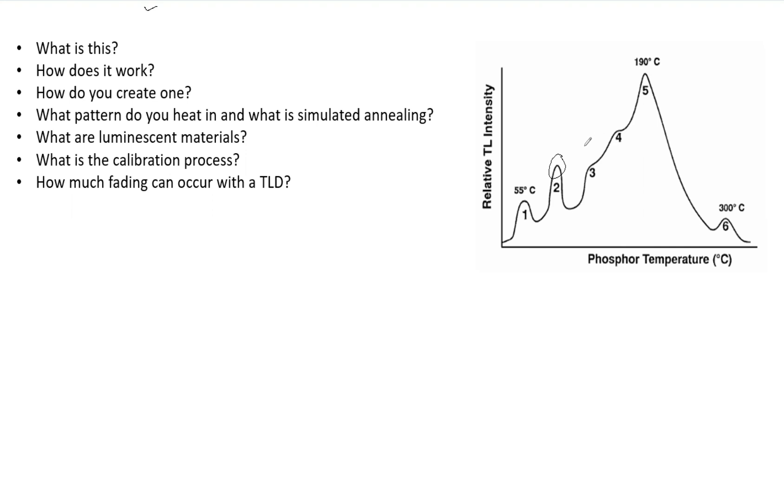It's important to understand not just that this is a glow curve, but how that works and be able to verbally explain it. So now, how do you create one? The first step is you have to preheat the TLD. You can look online, there are different temperatures and ranges and times, but you want to preheat the TLD. Then in its acquisition, you want to use a constant heat rate, and finally use annealing to reset the TLD.